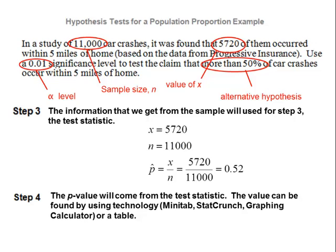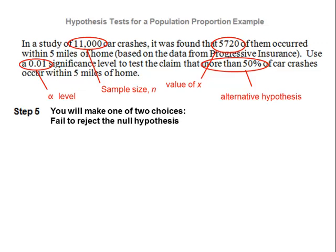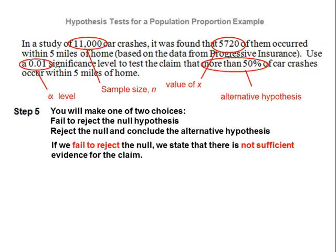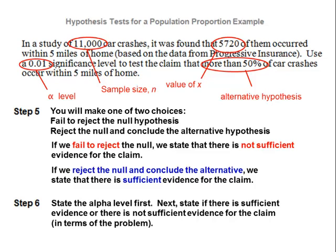Step number four: the p-value will come from the test statistic once we plug the values into our z formula. Step number five: we make one of two choices — we fail to reject the null, or we reject the null and conclude the alternative. If we fail to reject the null, we state there is not sufficient evidence for the claim. If we reject the null and conclude the alternative, we state there is sufficient evidence for the claim. Step number six: we state the alpha level, then whether there is sufficient or not sufficient evidence for the claim, stated in terms of the problem.